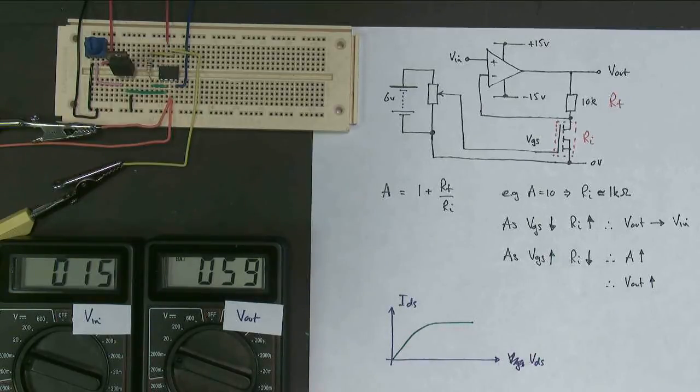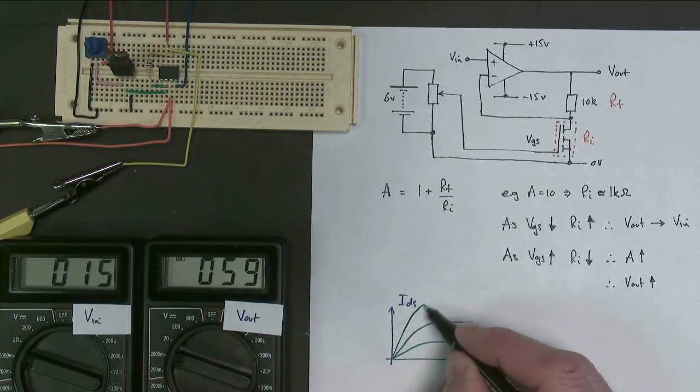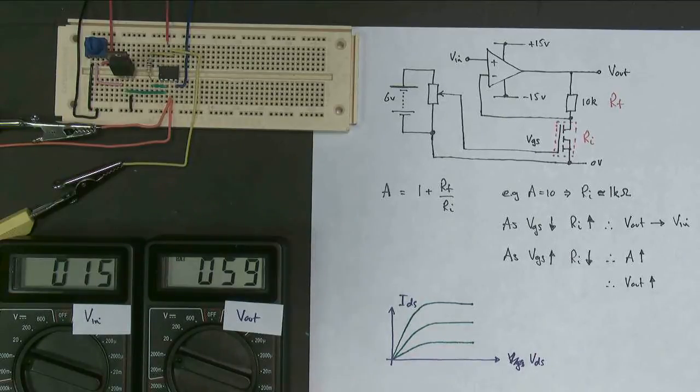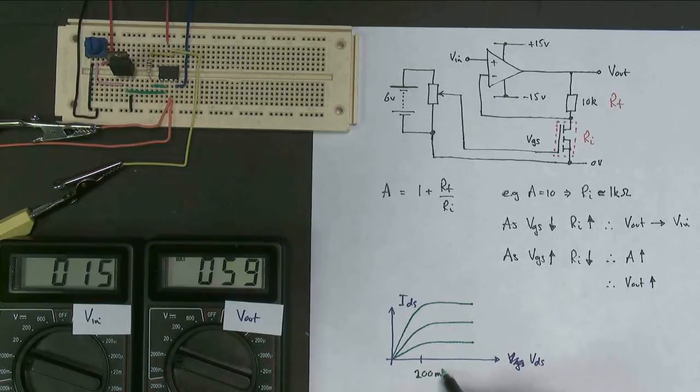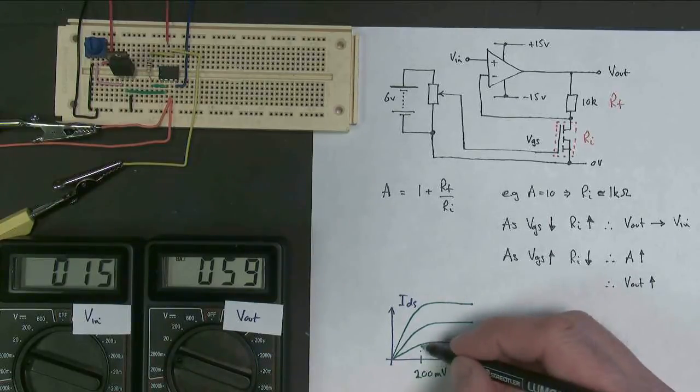And what we get here is we get a curve like this. At lower gate source voltage, we get a curve like this. The resistance is higher. And at higher gate source voltage, we get a curve like this. So the resistance becomes lower. But this has to be on the order of a few hundred millivolts maybe, before this starts to go wrong.